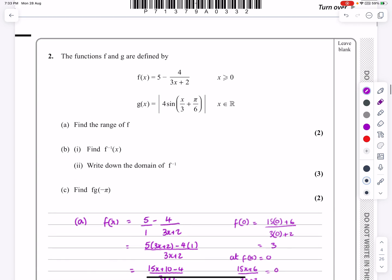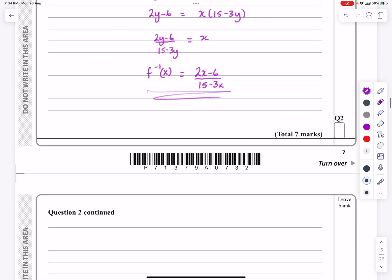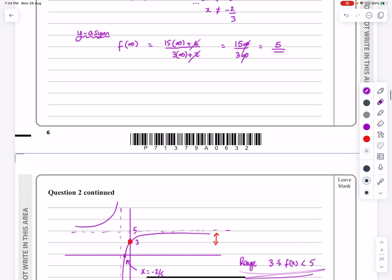Part 2: write down the domain of f to the minus 1. Well, the domain of the inverse is just the range of the original function. So here that was between 3 and 5. The domain of f inverse of x, they're x values, so between 5 and 3 including 3 but not including 5. Nice easy second part.